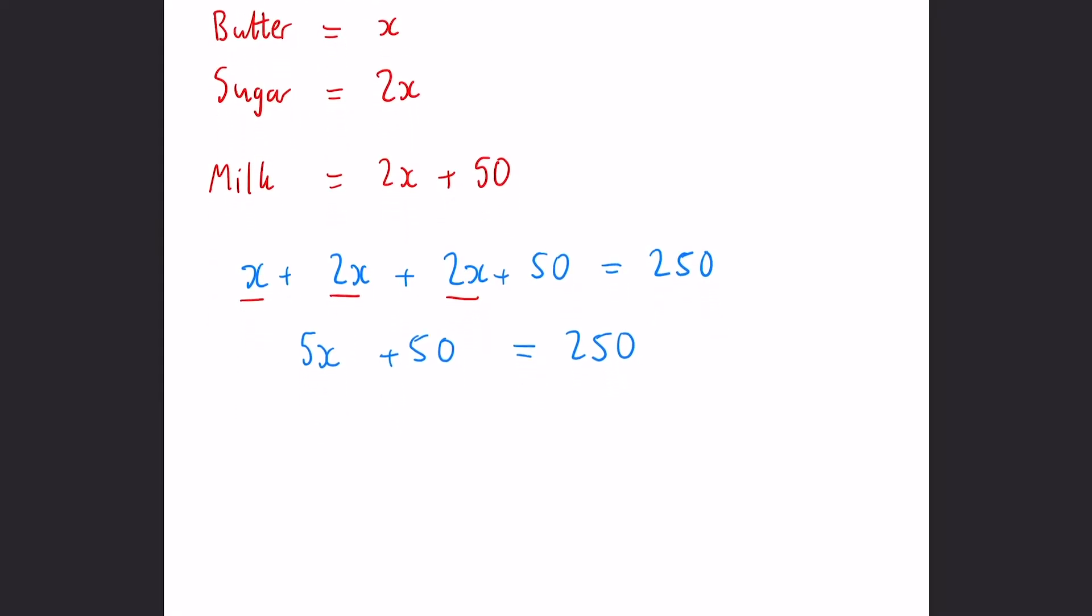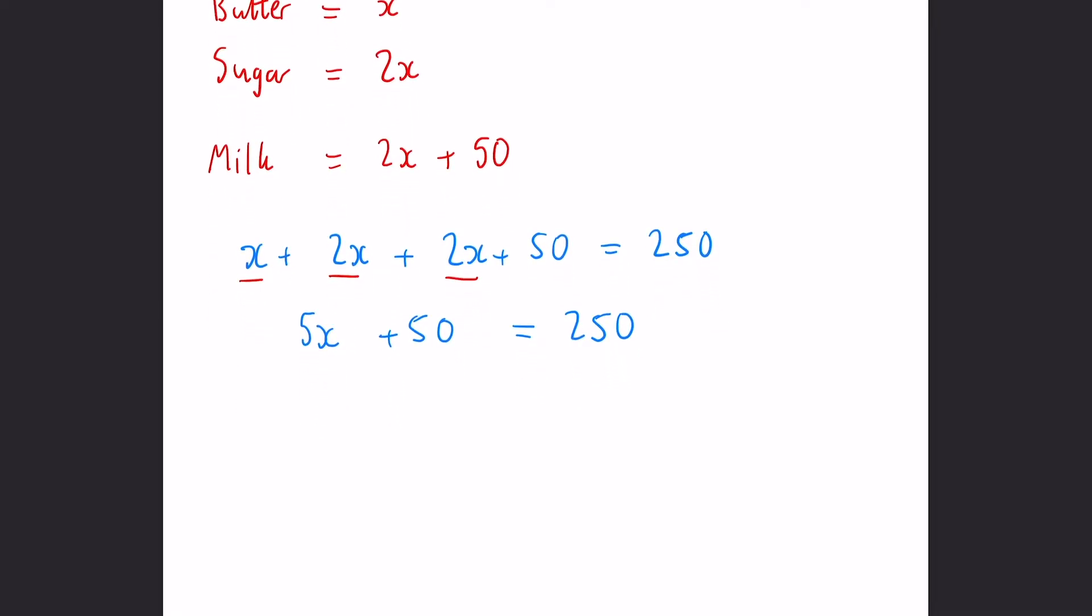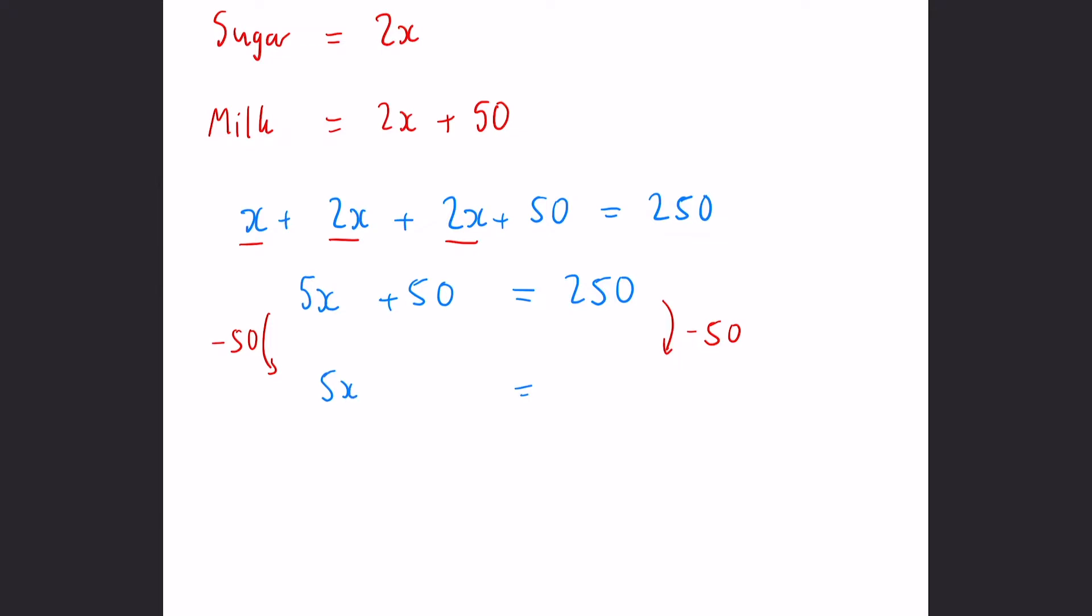And from the solving equations practice we've had, we can subtract 50 from both of these. And we're going to be left with 5x equals 200. So x must be 40.